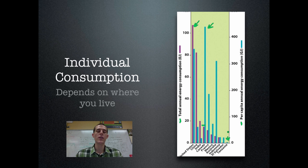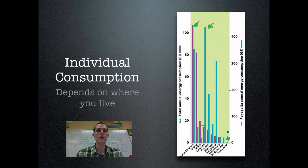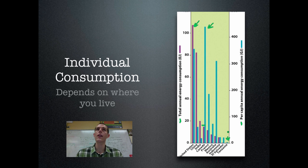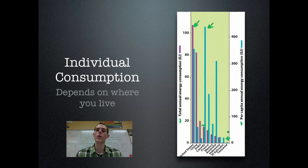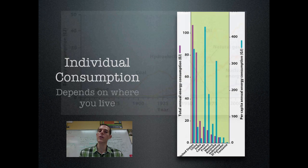Your energy consumption depends on where you live. If you live in a developed country, supporting your lifestyle takes a lot of energy — to make goods, heat and air condition your home, and produce your food. If you live in a developing country, your lifestyle is not energy intensive because you're not consuming many goods and probably don't have heating or air conditioning. So energy consumption varies greatly from country to country.